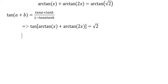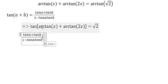Now we will use this formula in this situation. We have arctan x as a and arctan 2x as b, so we just put them in here.